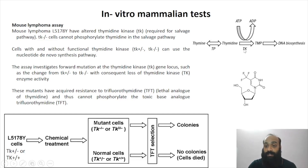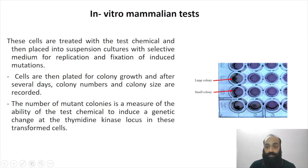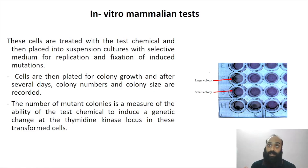If there is no functional thymidine kinase, thymidine will never be utilized via the salvage pathway. Even if TFT is present, the non-functional TK cannot process it, so DNA is synthesized only via de novo synthesis — which does not require thymidine — and the cell survives. Cells are cultured in TFT medium to observe survival based on whether the test chemical has converted functional TK into a non-functional form.